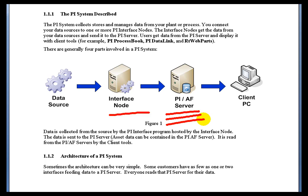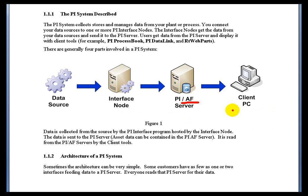it's collected and served up in such a way that different client applications — both regular user client applications you'd find in a Windows environment, thin clients you'd find in a web environment, or data access clients, things like relational database type queries using SQL queries using our PI OLEDB provider — we make that data available to all those clients. If you do have asset data, a kind of asset database type information, you can implement those structures in what we call our AF Server, and that can actually be located on a second machine.